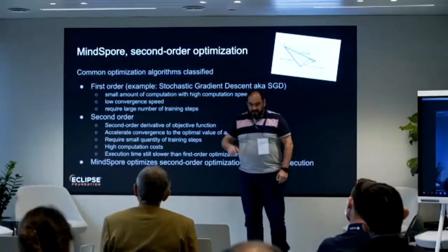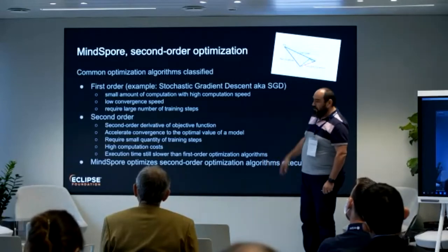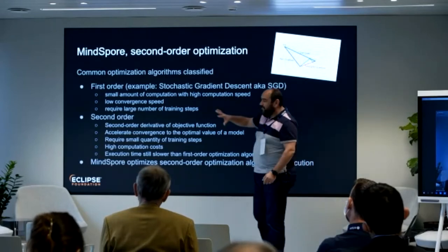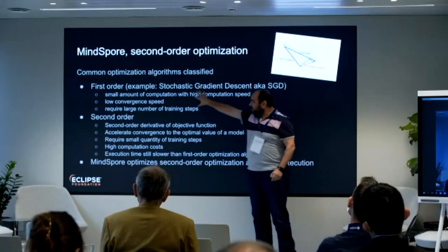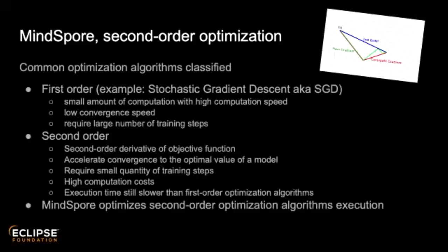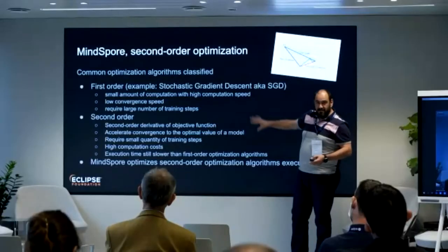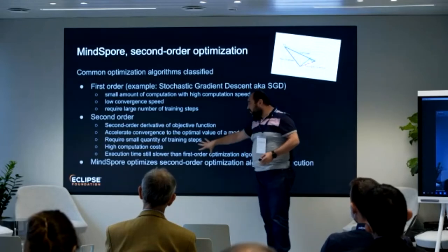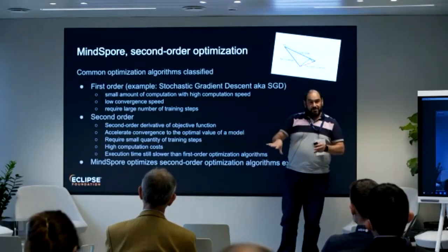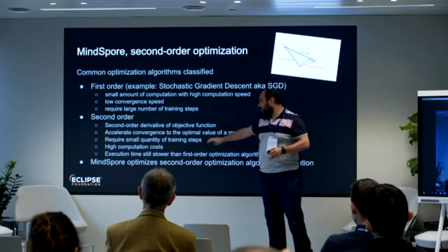Another interesting feature is second-order optimization. There are two orders of algorithm optimization: first-order and second-order. First-order works fine with a small number of computations and high speed per computation, but has a low convergence rate — meaning you need many steps to train your model. The classic algorithm for this is stochastic gradient descent. Second-order derives the loss function, allowing training with higher computation cost per step but faster convergence.